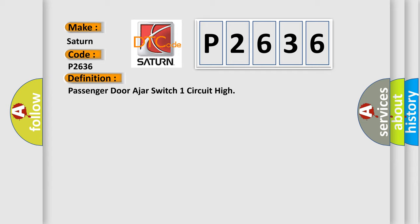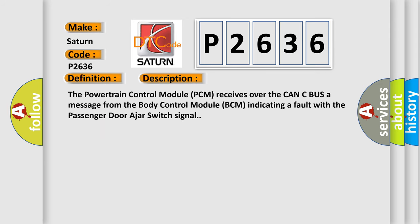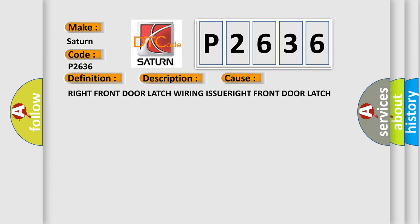And now this is a short description of this DTC code. The powertrain control module PCM receives over the CAN-C bus a message from the body control module PCM indicating a fault with the passenger door Ajar Switch signal.